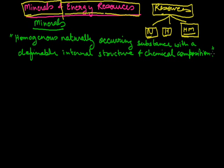The definition of minerals is: a homogeneous, naturally occurring substance with a definable internal structure and chemical composition. This is what we have to write in the exam if the question asks for the definition of minerals. The naturally occurring substances found in rocks have a definite chemical composition, and we name them accordingly.